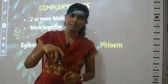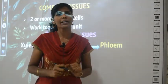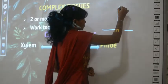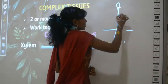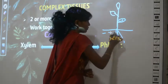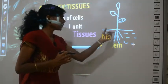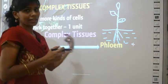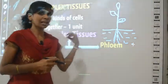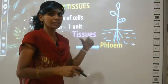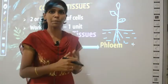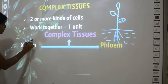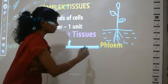In plants, certain materials are transported — you should use the word 'conducted.' When you pour water in the ground, the roots absorb the water. Who carries it to all parts of the plant? Xylem and phloem only take them. Xylem is the one which takes the water to all parts of the plant. Always remember: xylem takes water, phloem takes food.